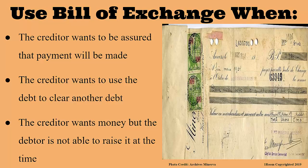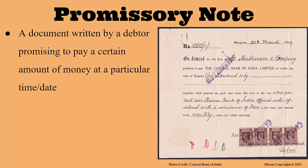Let us now look at another means of payment called a promissory note. That is another one I have never heard of. Today you are going to know a lot of means of payment that you never knew about before. A promissory note is written by a debtor to the creditor, stating that he will pay a stated amount of money at a particular time or date.